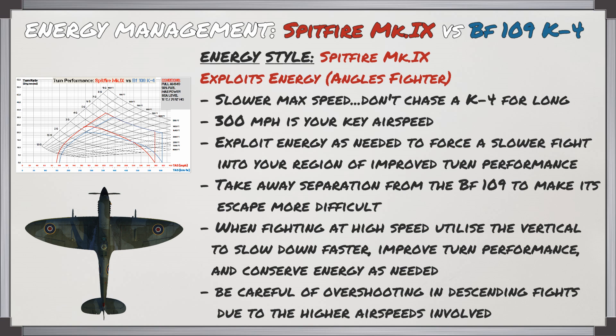For the Spitfire, the style is generally one of exploiting energy. With a slower max speed, you won't win a level speed chase against a K4. 300 miles an hour is the key airspeed — exploit your energy to force the fight below that threshold, because this is your region of improved turn performance, and use it to take away the 109's separation, making its escape more difficult. At high speed, utilize the vertical component to climb to slow down faster and improve turn performance, but be mindful of overshooting in a descending fight where higher airspeeds lower your turn performance relative to the 109.